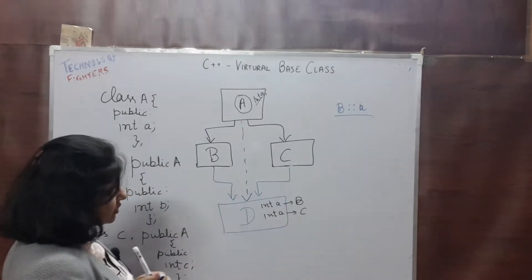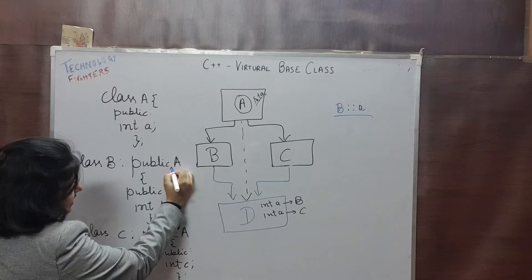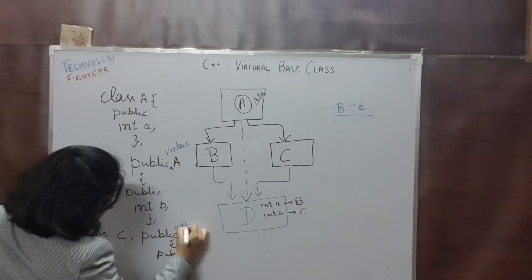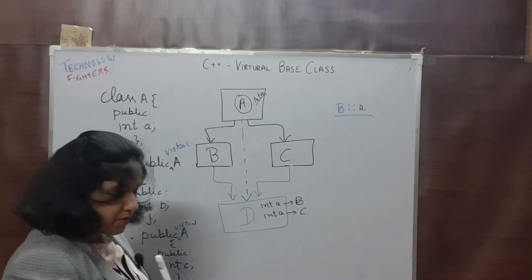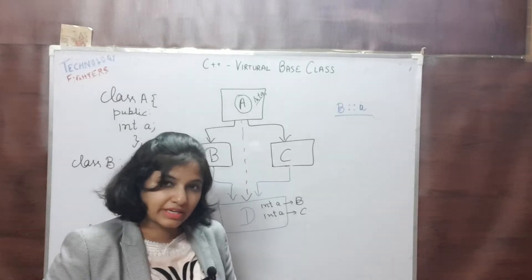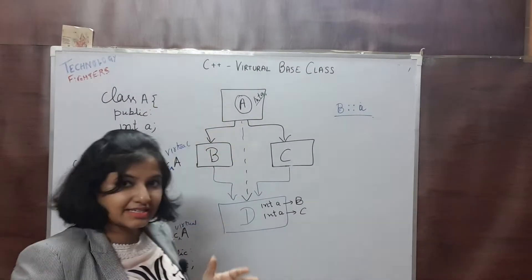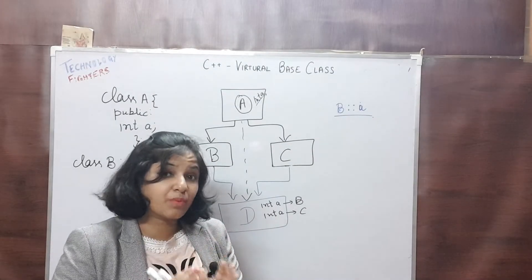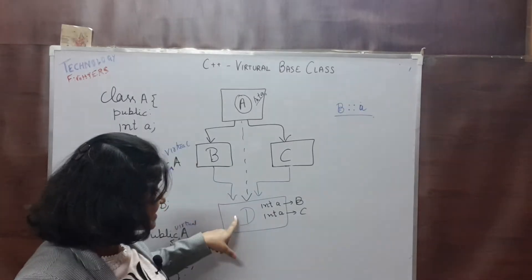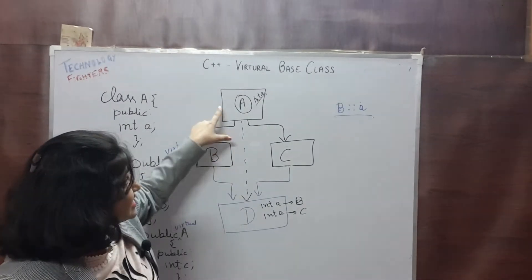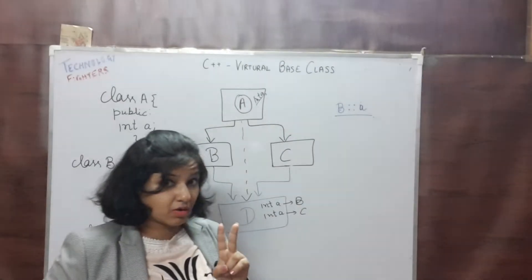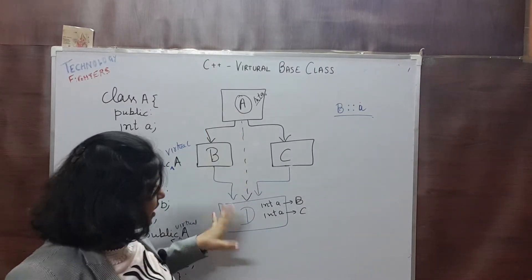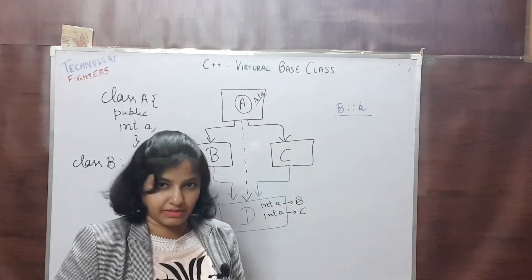We will include one keyword: virtual. When we include virtual keyword, then this class has become as virtual base class, and it's the responsibility of compiler to give single copy of class A to class D, not double copy or not any other number of copies. Only one copy, and that copy will be ensured by compiler.